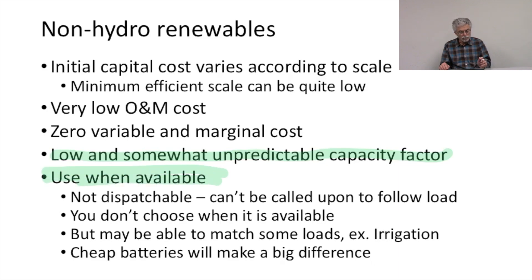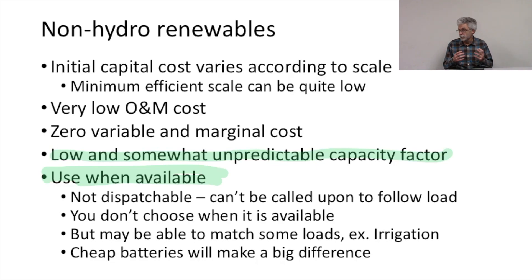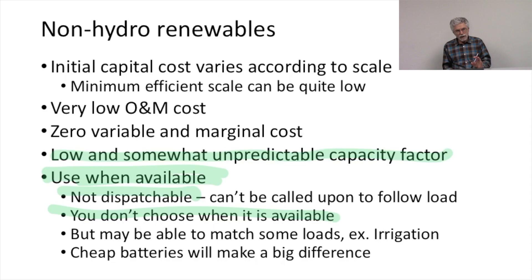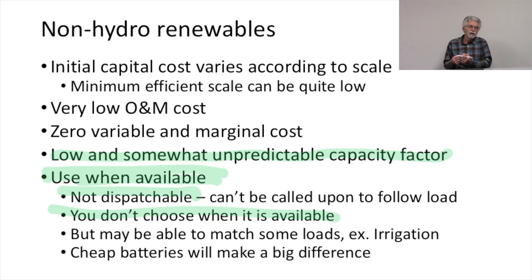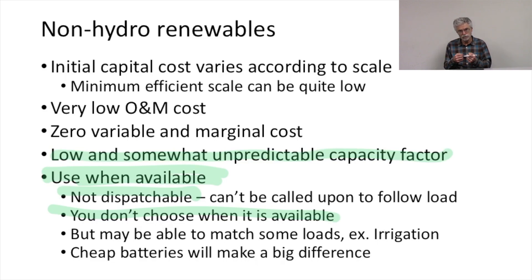Another really important characteristic of non-hydro renewables is the use-when-available characteristic, because of their low variable costs. These plants tend to be non-dispatchable — you can't call on them when you want to follow load. They're there only if the resource is there, so you don't choose when they're available to run. On the other hand, you may be able to match certain renewable supply to certain loads. For example, you could think about matching the output of solar facilities with irrigation, so there would be a natural match between the solar supply and the use for the electricity.